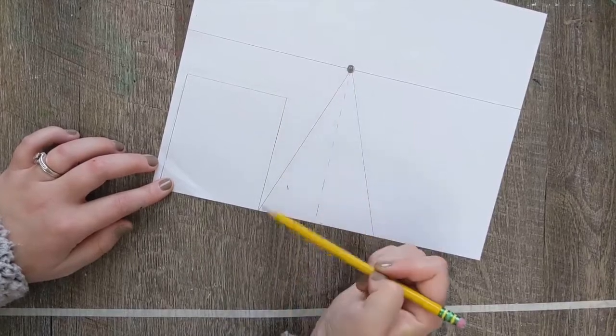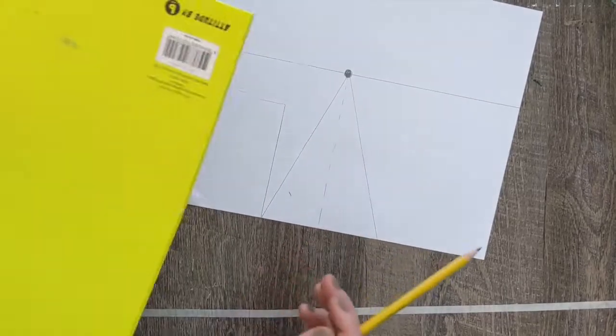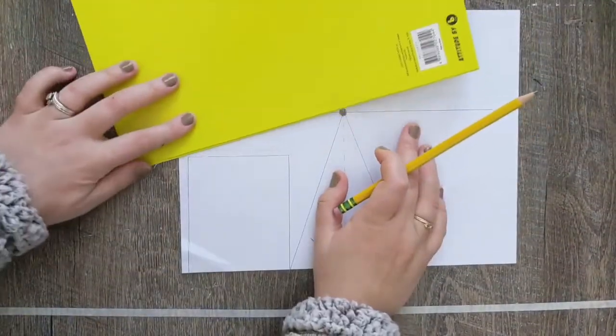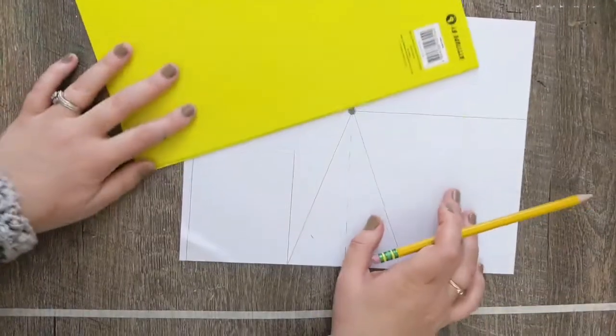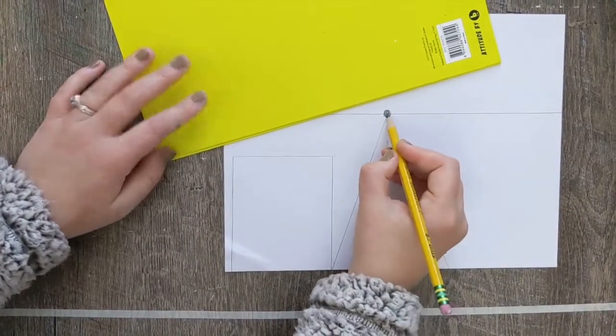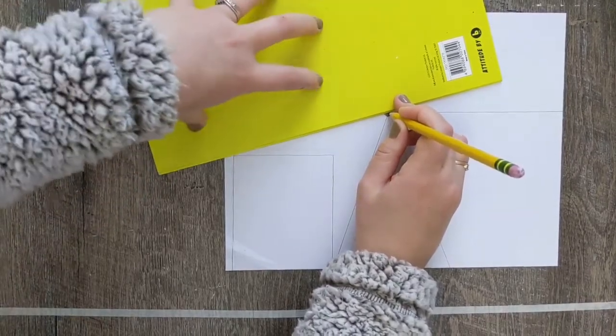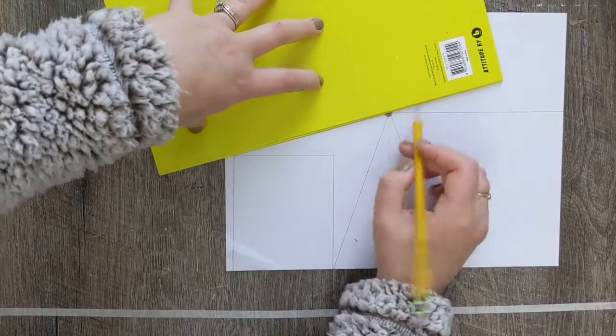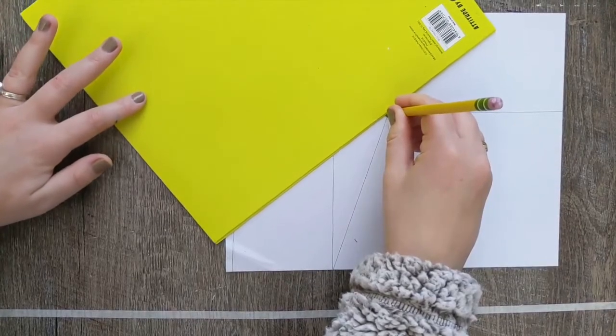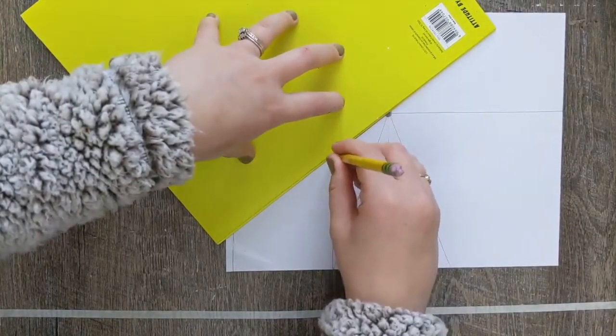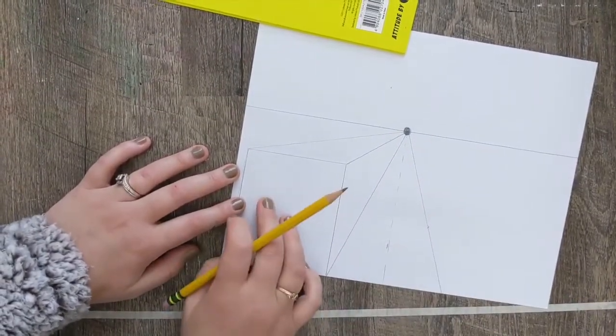So, what we are going to do now is we are going to connect the corners of our building to the vanishing point. We are not going to connect the one my finger was just on, just because it's going straight through our building. So, the easiest way to do this is to put your pencil right on your vanishing point, hold it nice and steady right there, and then slide your straight edge so that you connect the corner and your pencil. And you will just draw a nice, light line. And then I will do the same thing and just turn the straight edge, my pencil holding it in place and connecting.